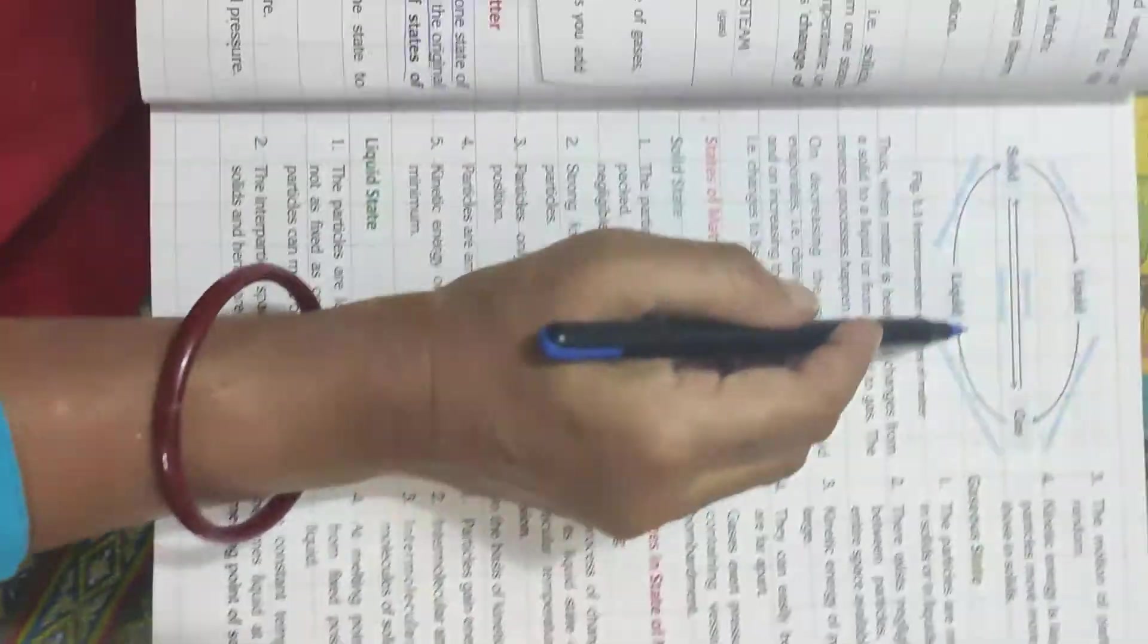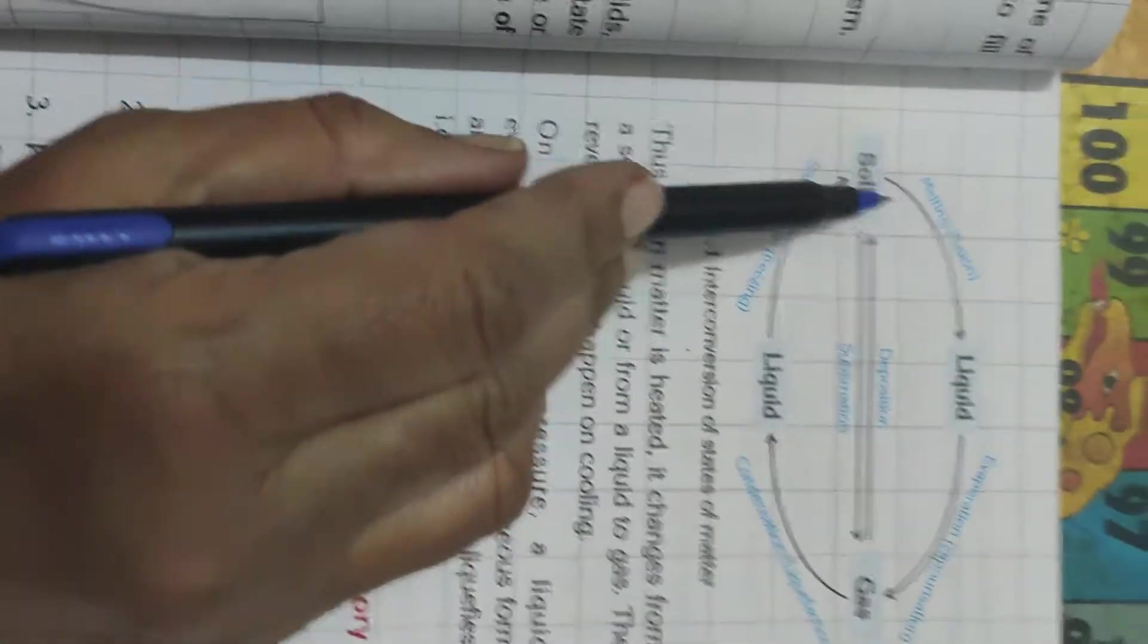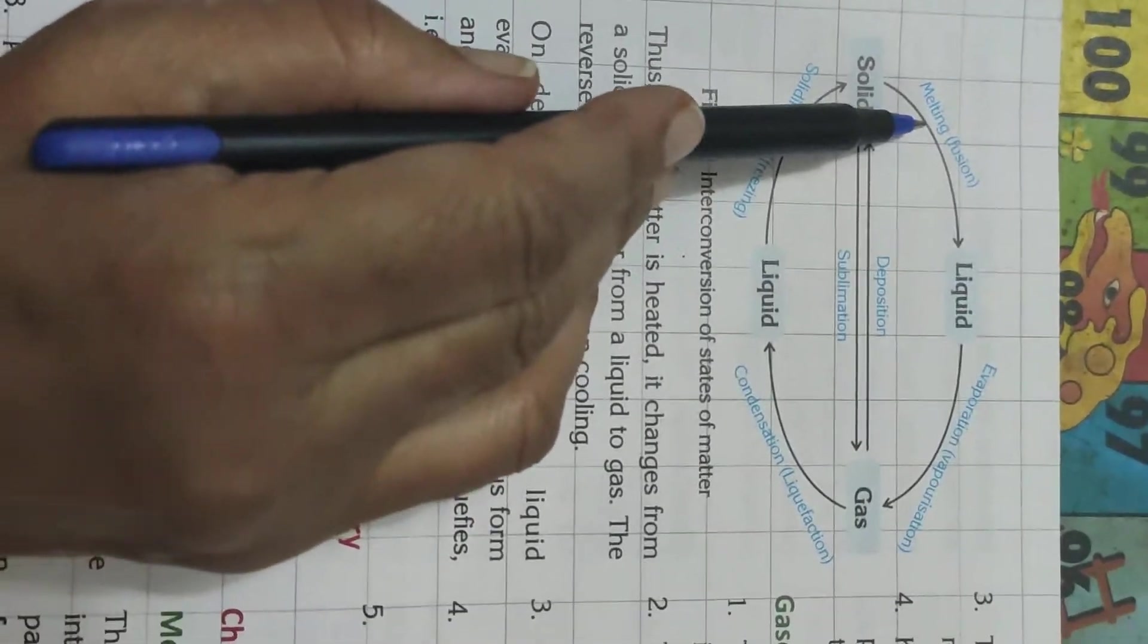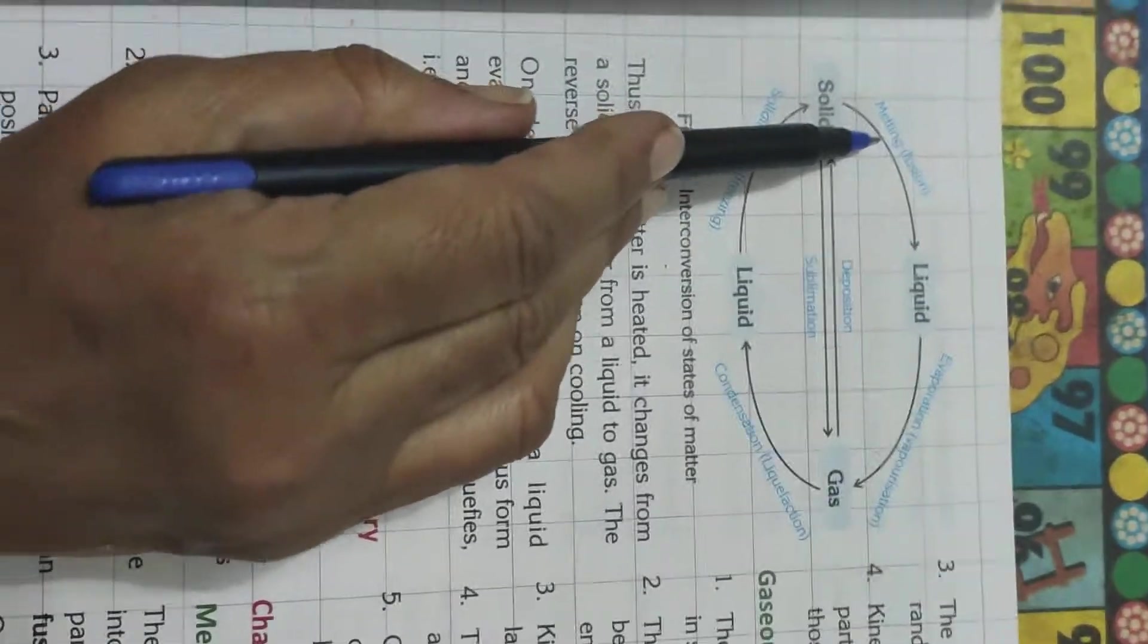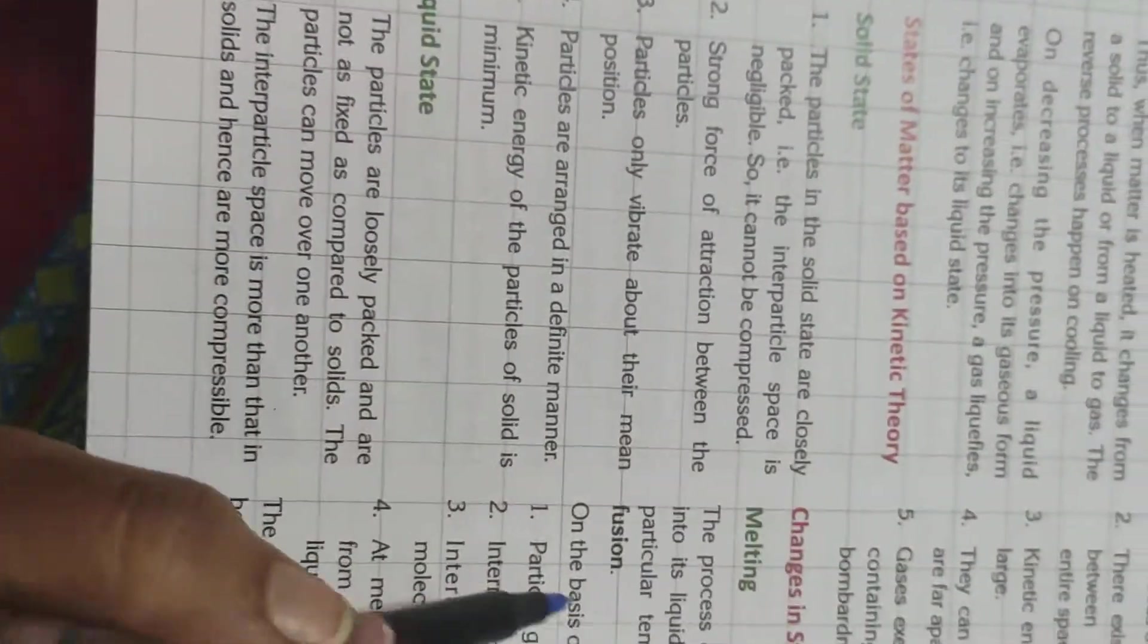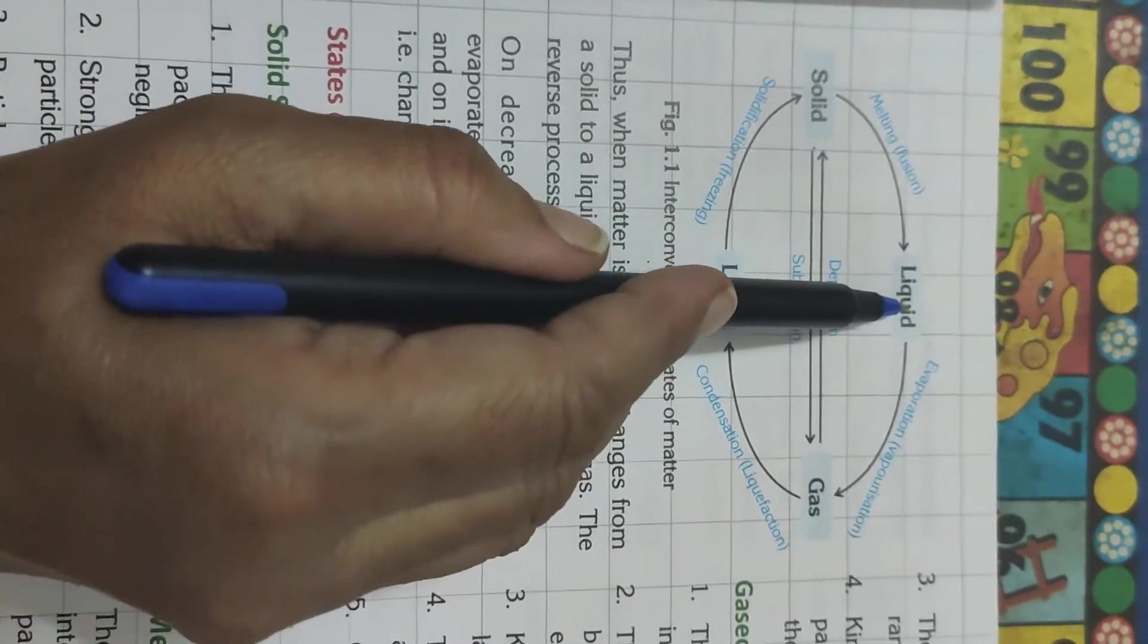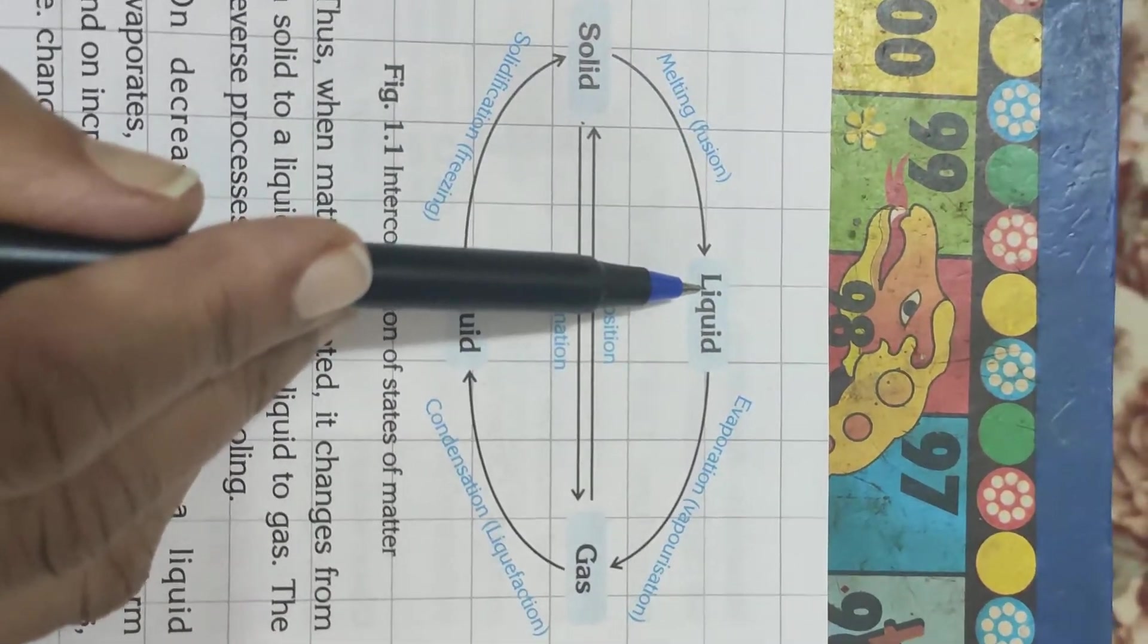Now, let us focus, children, on this diagram. This diagram you please see. See, solid is changing to liquid. This is called melting or fusion. So, if you have to define melting, what you will say? Melting is a process of change of solid to liquid at a particular temperature. Now, from liquid to gas, it is called evaporation or vaporization.